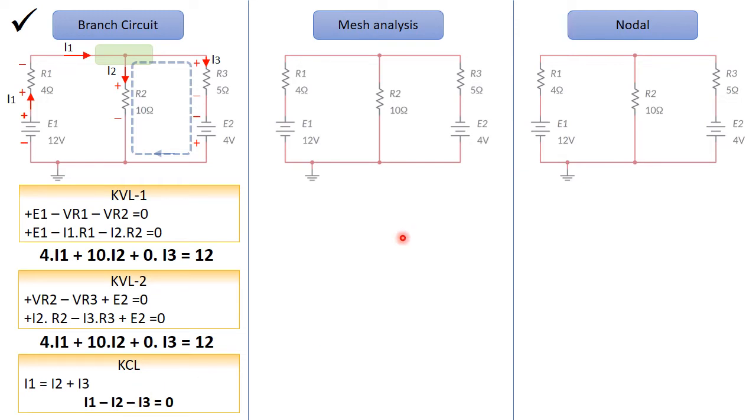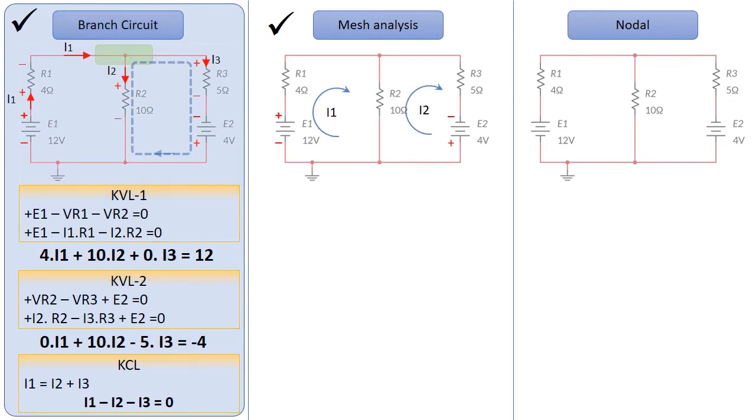In mesh analysis, what we do? First of all, we need to assign the currents I1 and I2 clockwise, as you can see here. Then we will put the signs, or the polarities of the voltage sources, in the circuit here.